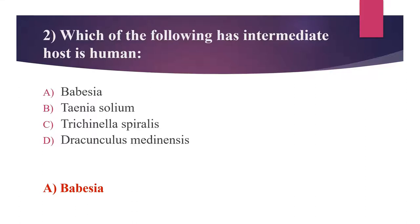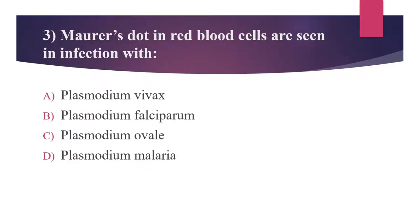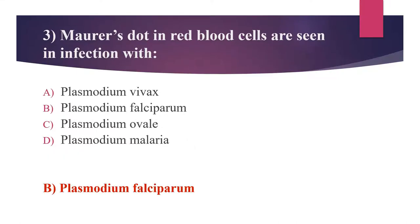Next question: Maurer's dots in red blood cells are seen in infection with which Plasmodium? Option A: Plasmodium vivax. Option B: Plasmodium falciparum. Option C: Plasmodium ovale. Option D: Plasmodium malariae. Maurer's dot is a sac-like structure in the cytosol of RBC, visible as a blue dot in Giemsa-stained blood smear. It is seen in Plasmodium falciparum, which causes severe malaria. Importantly, the gametocyte of Plasmodium falciparum is crescent-shaped.